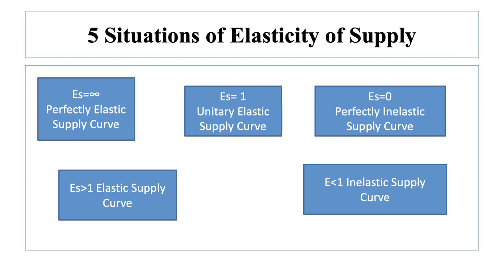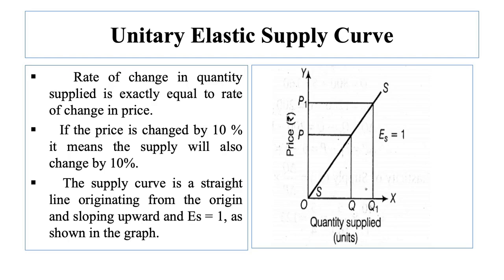The first case is when elasticity of supply is equal to 1. This is also called unitary elastic supply. In this case, the rate of change in quantity supplied is exactly equal to the rate of change in price — meaning there is the same rate of change in supply and price. If the price changes by 10%, the supply will also change by 10%. Hence, the supply curve is a straight line originating from the origin and sloping upward, and elasticity of supply equals 1, as shown in the graph.